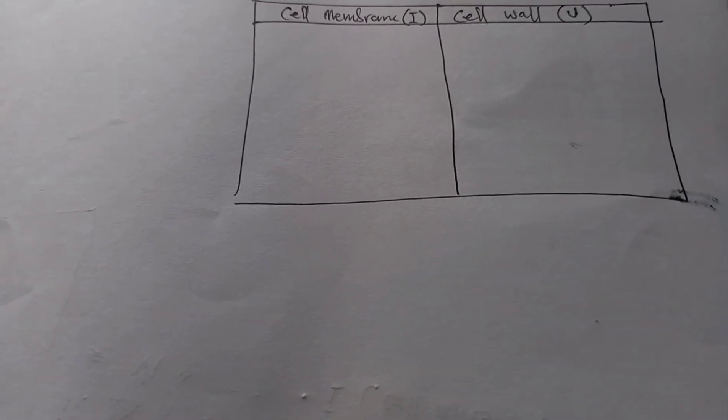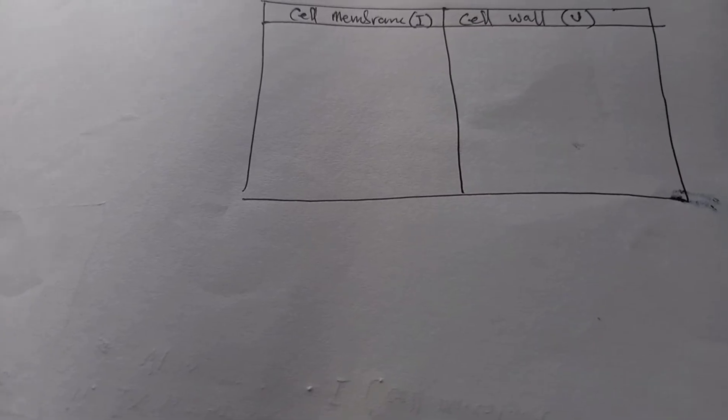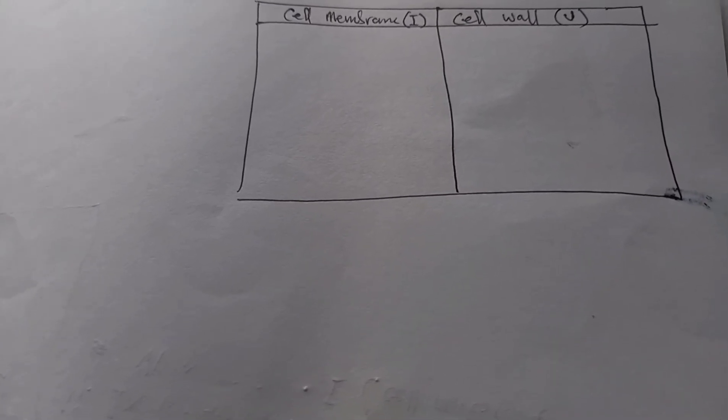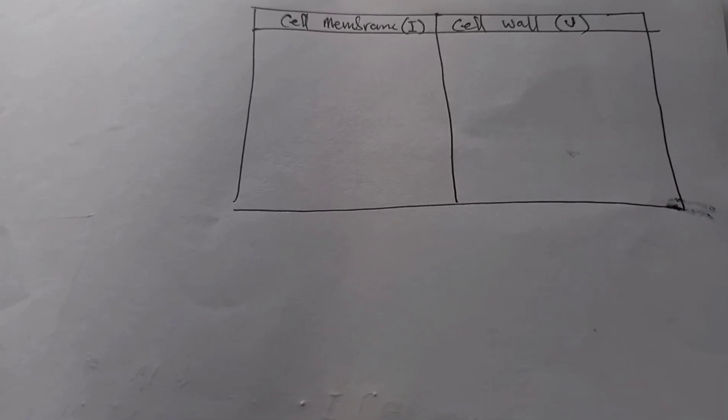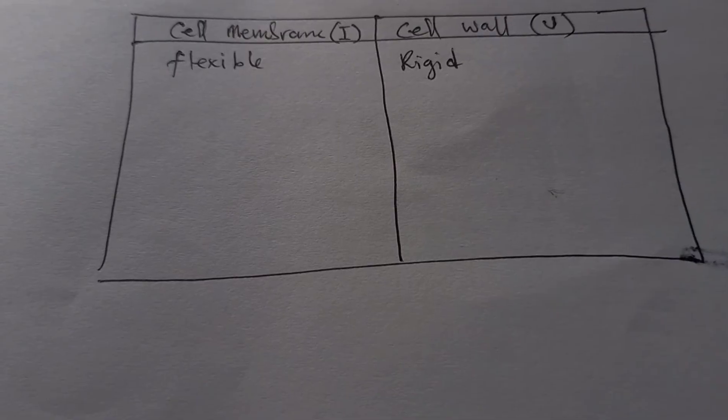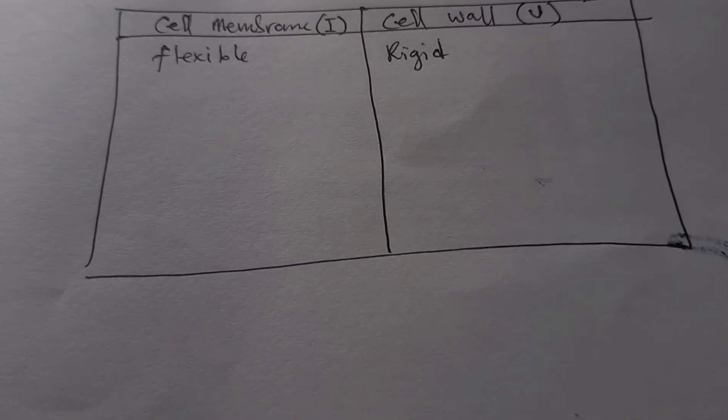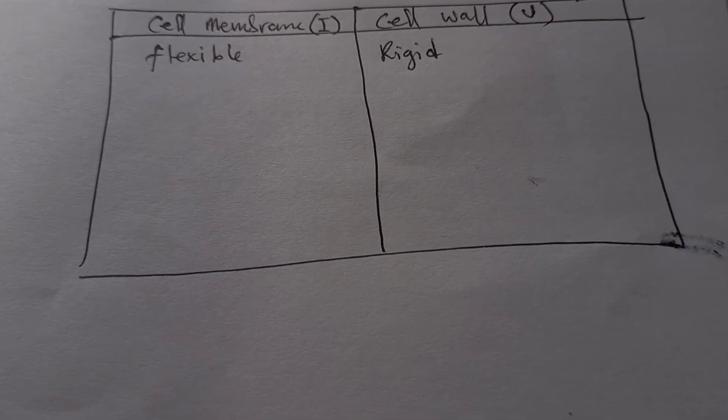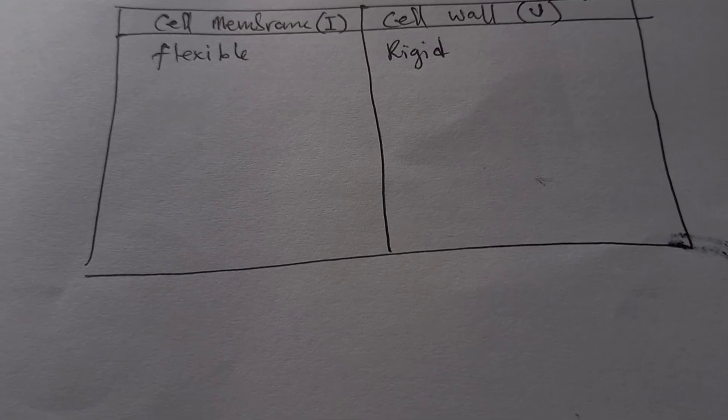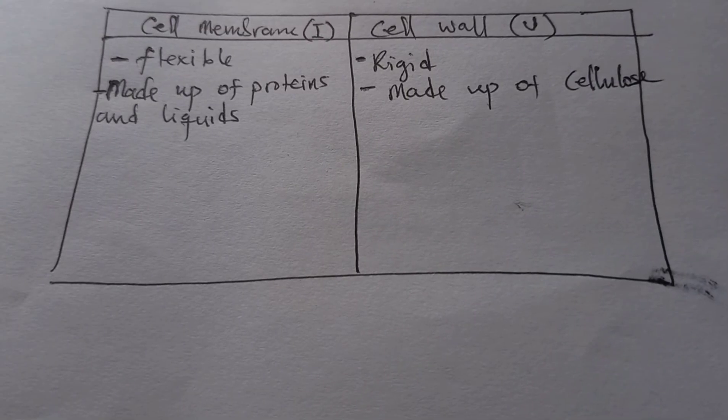The last one says tabulate the differences between the cell membrane and the cell wall. The question says tabulate two differences between the parts labeled I and V. I is the cell membrane, and V is the cell wall. One difference is that the cell membrane is flexible while the cell wall is rigid. You can also see another difference - the cell membrane is made up of proteins and lipids while the cell wall is made up of cellulose.